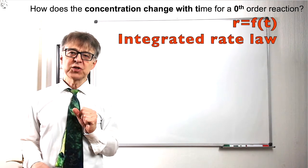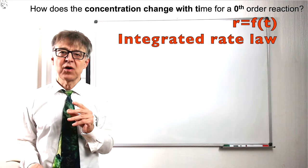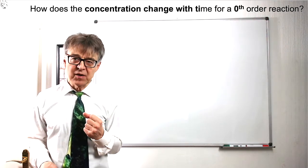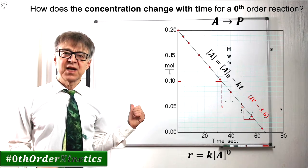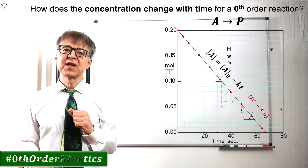The change of concentration with time is also called the integrated rate law. For a zeroes order reaction, it is a equals a0 minus k times t.